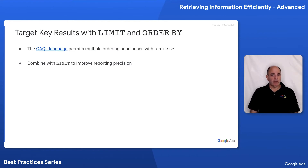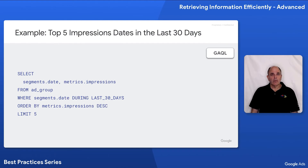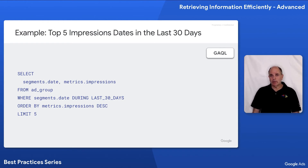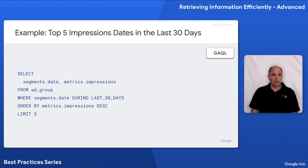Let's look at a couple of examples. In the first example, we want to find which dates of the last 30 days had the greatest impressions, using the GAQL query language, which is specific to the Google Ads API. One thing to be really clear about is that GAQL is not SQL. It superficially resembles SQL — you see SELECT, FROM, and WHERE keywords — but there are tangible differences between the behavior of GAQL as compared to SQL.